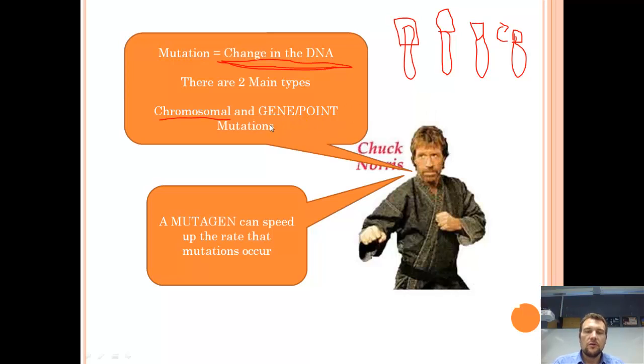But the kind of mutations that we're going to concentrate on are gene or point mutations, and that usually means a single base change. So you have a sequence of bases, and then one of them ends up being changed, and that alters the sequence of DNA. And that is an example of a point mutation, and that usually happens within a single gene.